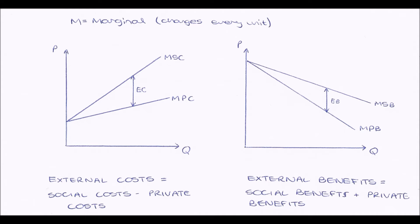On our graph on the right, we can also show external benefits. This time our two lines are sloping downwards. On top we have the marginal social benefit — the benefit to everybody in society — and underneath that we have the marginal private benefit, the benefit to individual firms and individual people. The area between the two lines represents external benefits, the total positive externality. So external benefits equals social benefits minus private benefits.